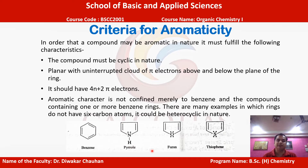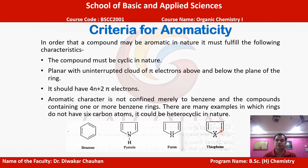Similarly, if we take the example of pyrrole, each corner represents carbon atoms while the nitrogen is also involved in forming the cyclic five-membered ring. Similarly, in furan there is also a five-membered ring including the oxygen atom, and in thiophene there is also a five-membered ring which includes sulfur in the formation of the cyclic ring.